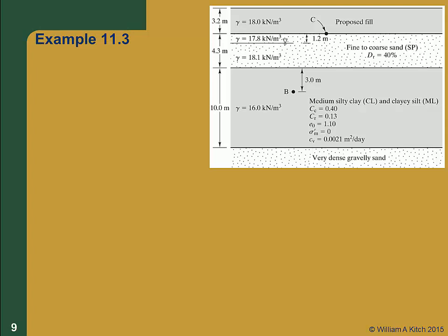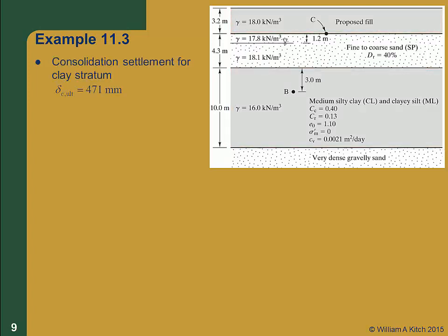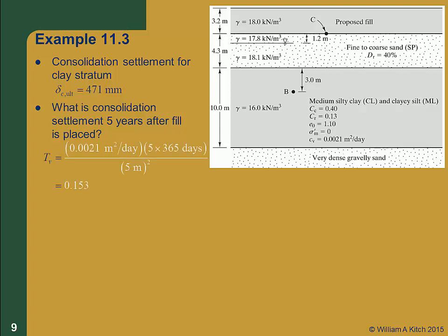Let's illustrate how to do these computations with an example — we'll solve a portion of Example 11.3 by hand. We're given a 10-meter thick compressible clay layer with the properties shown, and a 3.2-meter thick fill is to be placed on the ground surface. We'll skip the computations for the ultimate consolidation settlement; the value of delta_C ultimate is 471 millimeters. The first question: how much settlement occurs five years after the fill is placed? We must define the time factor representing five years: T_v equals C_v of 0.0021 m²/day times 5 years times 365 days/year, divided by (5 m)², which gives T_v equal to 0.153. Using Equation 11.24, the simplified degree of consolidation is 44.2%, and the consolidation settlement at 5 years is 44.2% of 471 mm, or 208 millimeters.